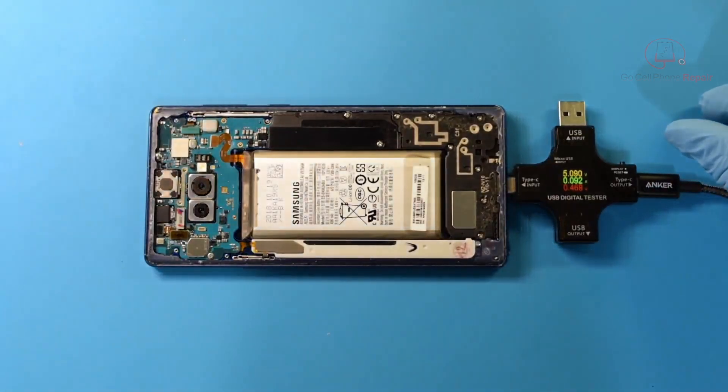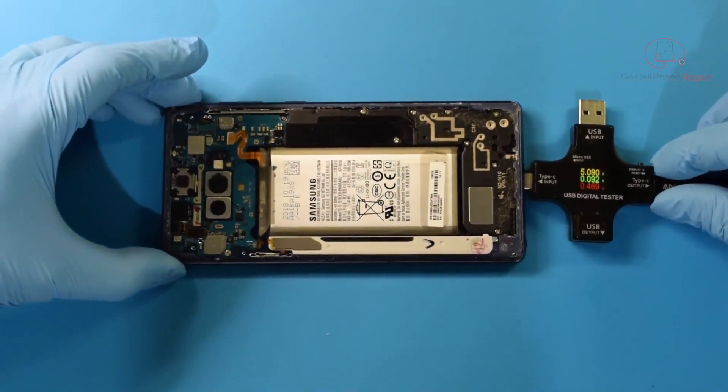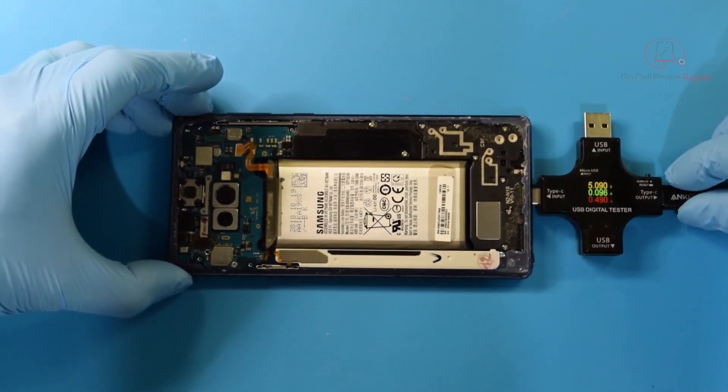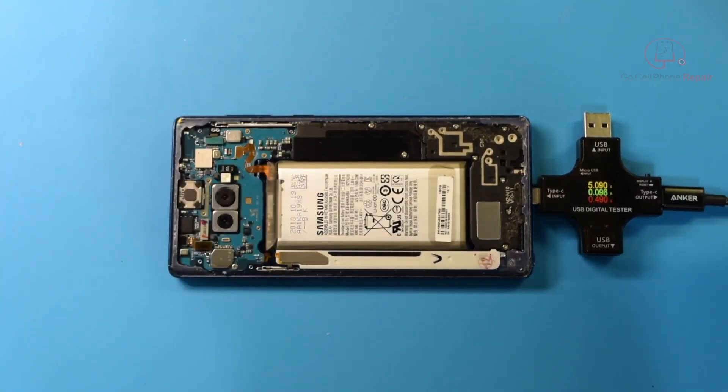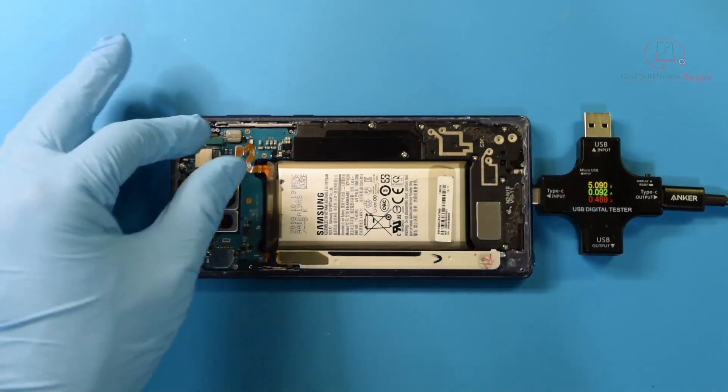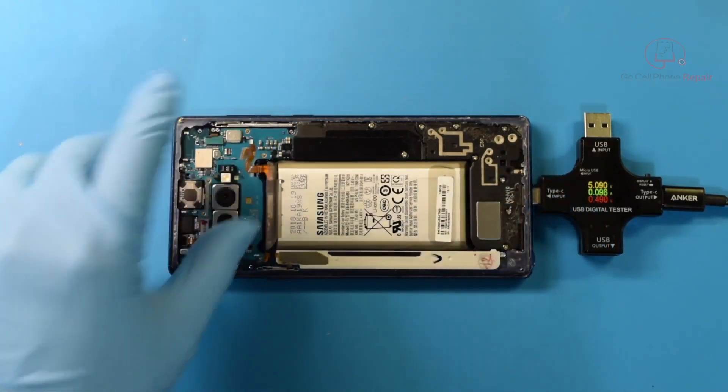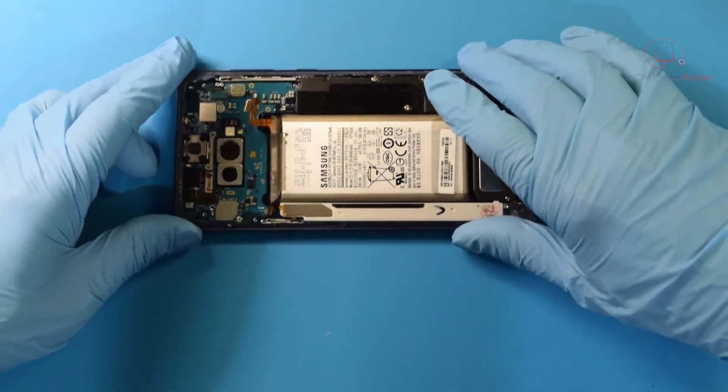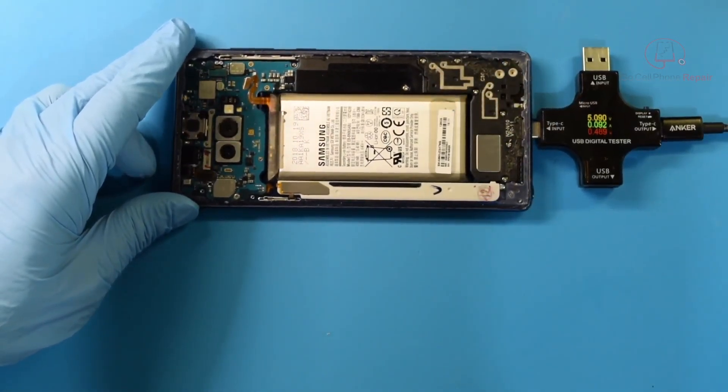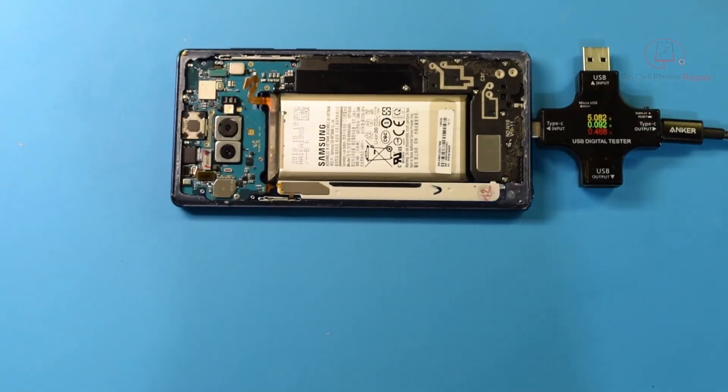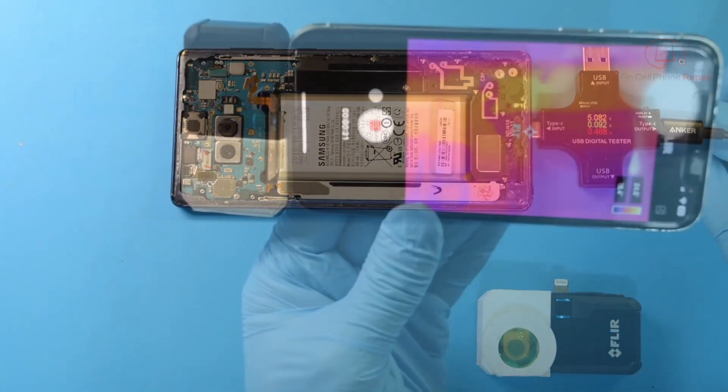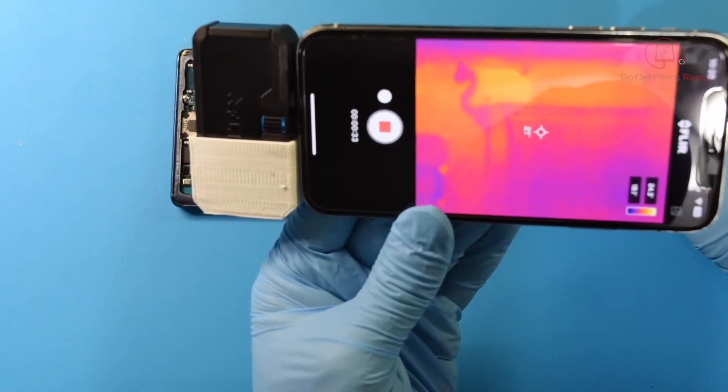What that indicates is that there's something here pulling current when it really shouldn't be. Because there's current going into the phone, it should be generating some heat somewhere. I'm going to get the thermal camera. It's not going to be a lot of heat because it's such a low amperage draw, but with any luck this will pick up on our camera.